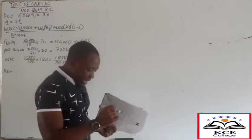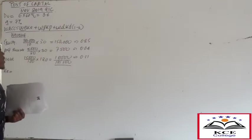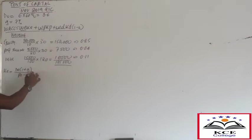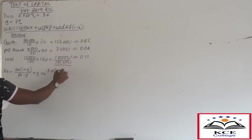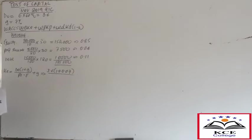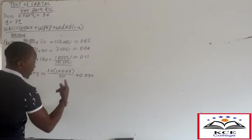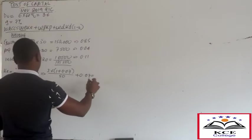For WACC, we don't consider the cost of retained earnings - we use only the cost of ordinary shares: KE = D0(1+G) / P0 + G. D0 = 3.6, growth rate = 7% (0.07), P0 = 50. KE = 3.6 × 1.07 / 50 + 0.07 = 14.7%. Cost of preference: KP = (12% × 20) / 30 × 100 = 8%. Cost of irredeemable debt: KD = (10% × 100) / 120 × (1 - 0.3) = 5.83%.